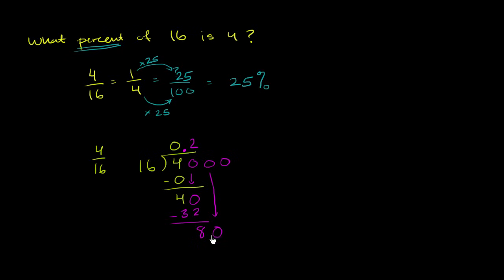And we have 16 goes into 80. Let's see, 16 goes into 80 five times. 5 times 16 is 80. You subtract, you have no remainder, and you're done. 4 sixteenths is the same thing as 0.25.